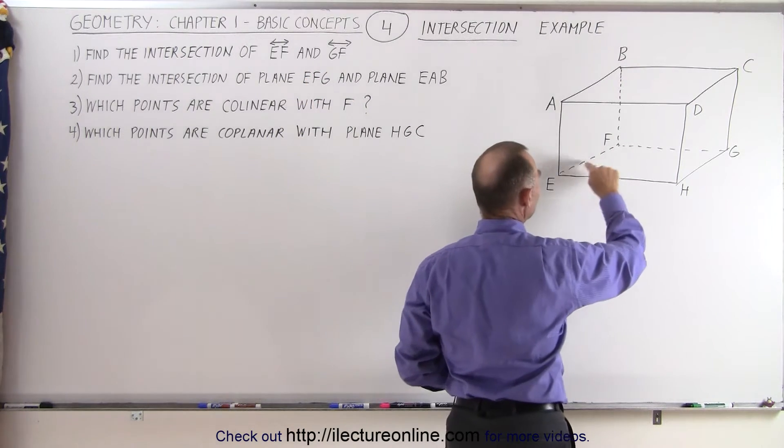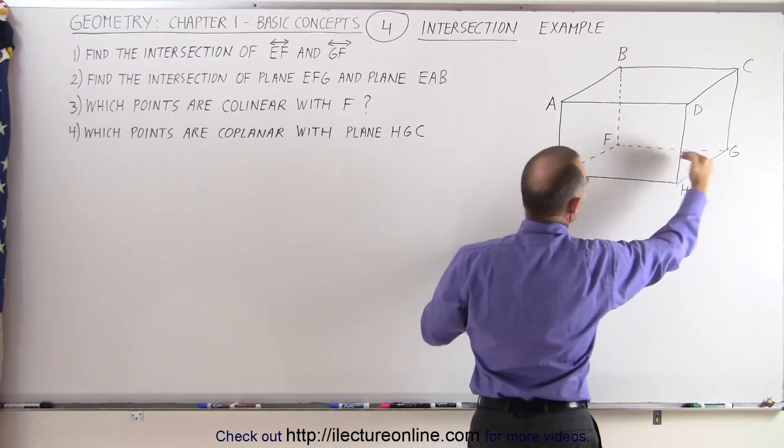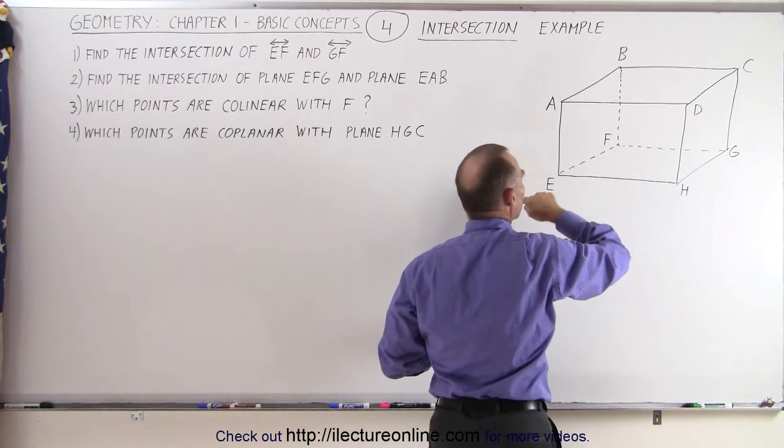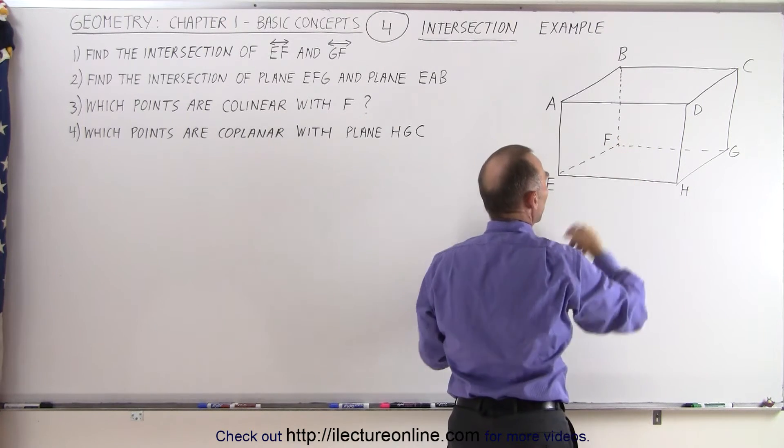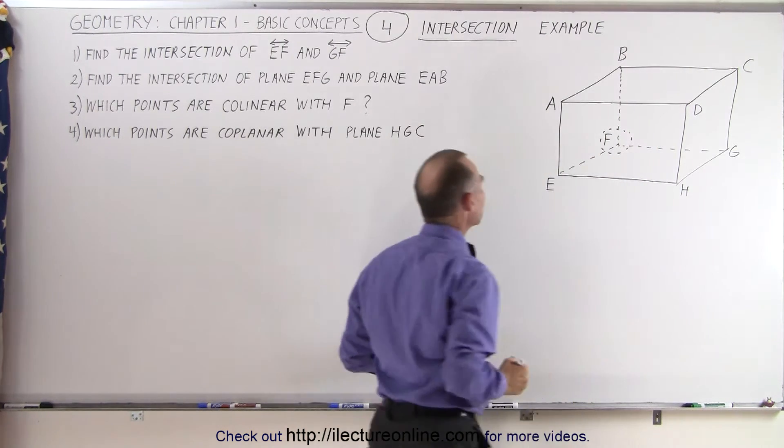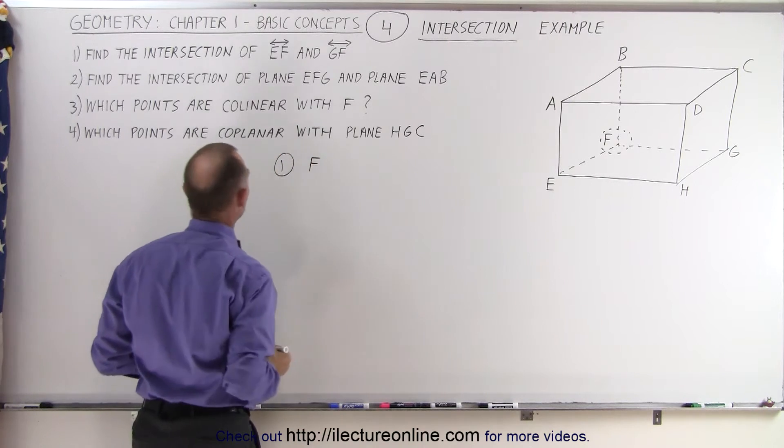So the points E and F, that would be this line right here, and G and F would be this line right here. And notice that this line should go to infinity in both directions, so should the line EF right here. And they do intersect at this point, they intersect at the point F. So therefore, the answer for number one is that the intersection occurs at F.